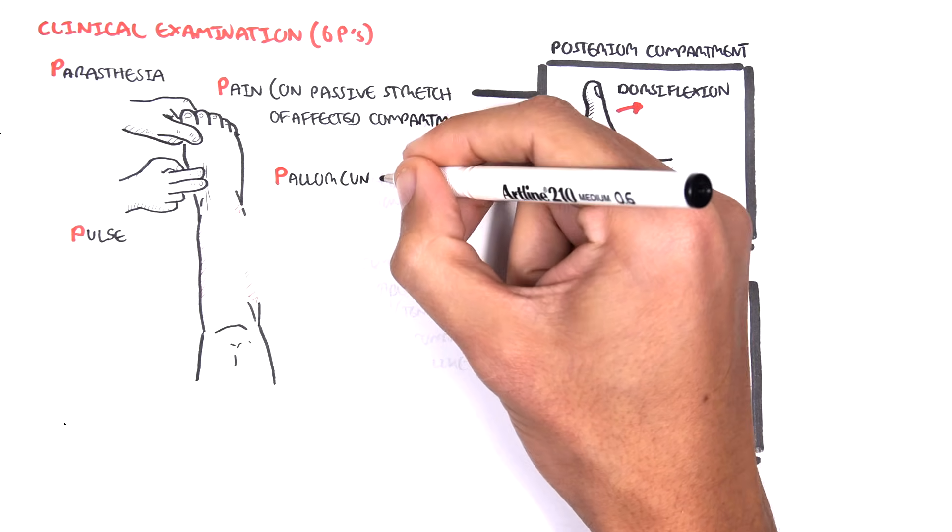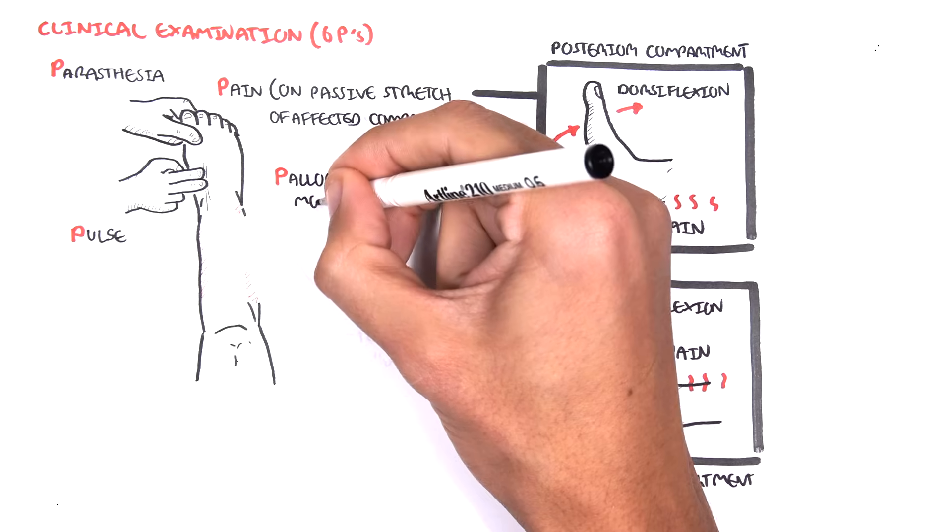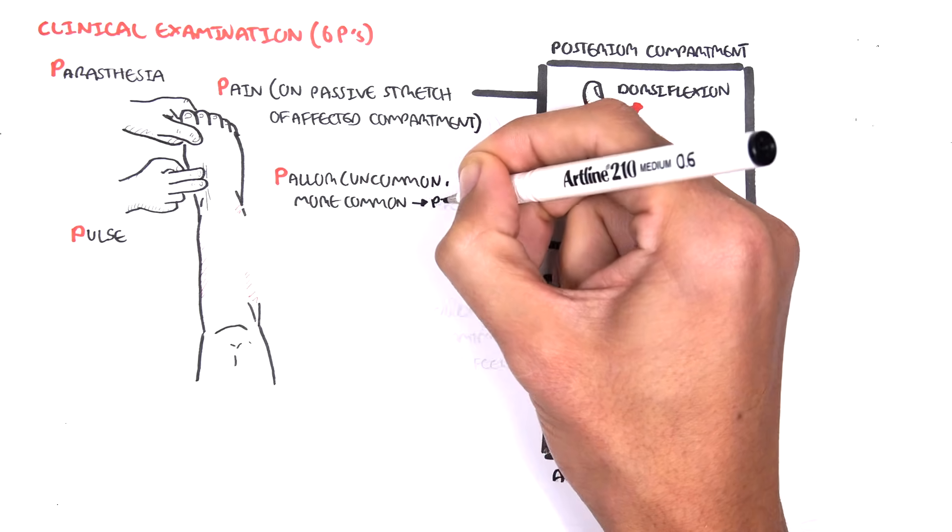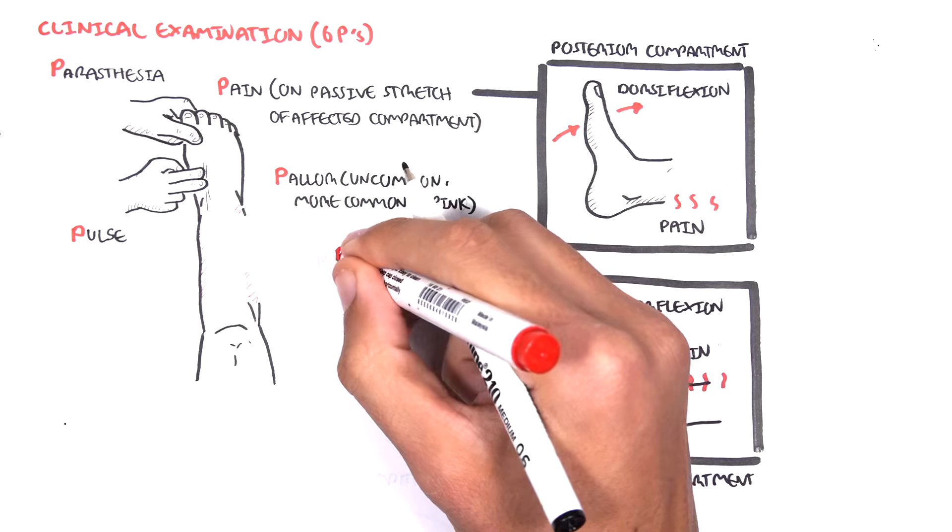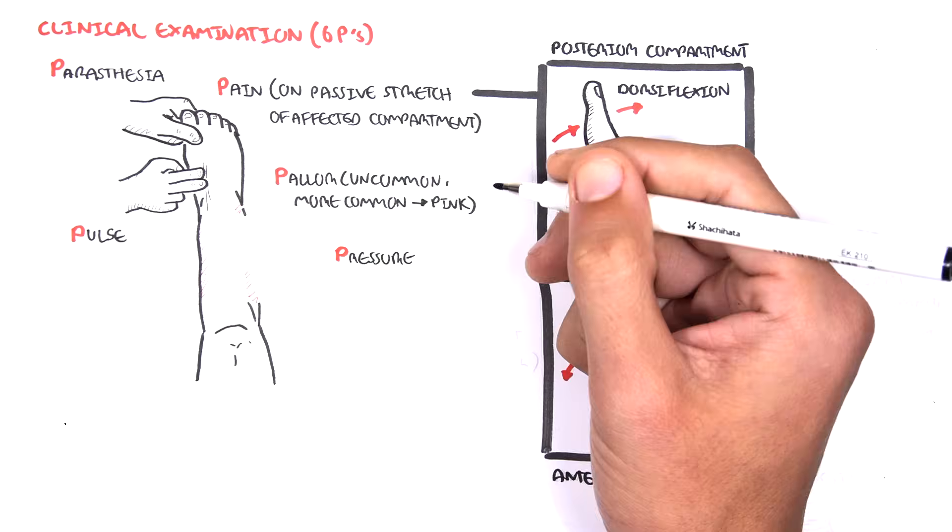Pallor is the fourth P. In compartment syndrome, pallor is uncommon. What is more common is pink because the limb still has some form of blood supply.